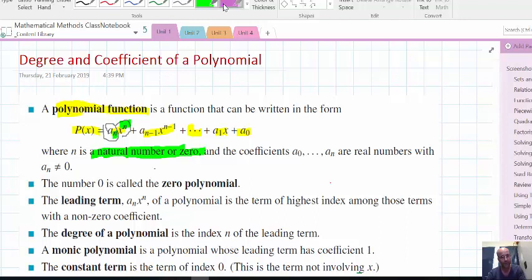The coefficient, which is on the front here, this one's called A sub N. The N is just a label. It just tells you the labeling of it.